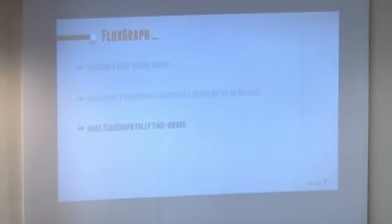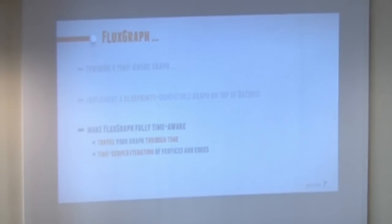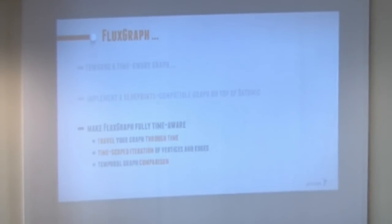What you want to do with FluxGraph is allow three kinds of capabilities. First, time travel through your graph - you have one version of your graph and say show me the version one year ago. Second, if you have a particular version of your node, be able to easily travel back and get the previous version or iterate through time. And finally, if you have two versions of your graph at different time points, do an easy comparison - what has changed in this graph, how can I compare them?